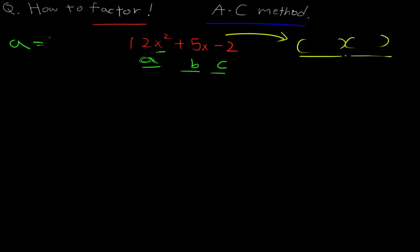So we have a equals 12, b equals 5, and c equals -2. Let's use the A-C method. The reason we call it A-C is because we multiply A and C.